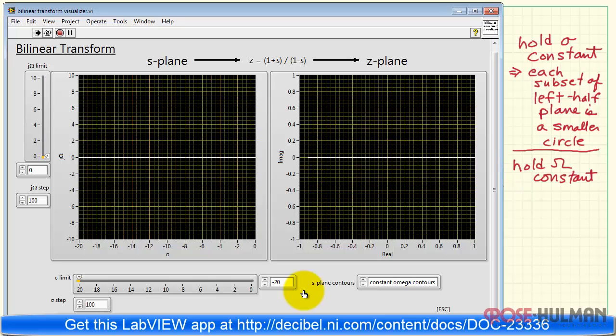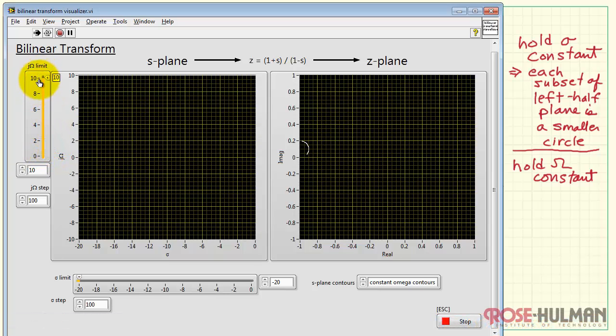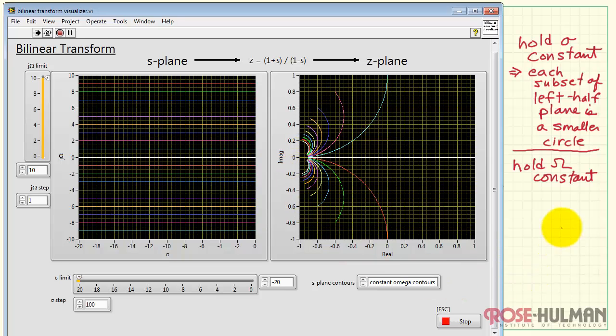We find that each subset of our left half plane ends up looking like a smaller circle. Now let's try holding capital omega constant. So this is interesting. We see that straight lines get bent into arcs. In this case, the arc gets smaller as we move up in the frequency axis direction. Again, we can get a whole family of contours set up like this. Here we see that particular contour, here's the next one, and so forth. This one right here maps to that small arc like that. We find in this case that each frequency translates into a single arc in the z-plane.